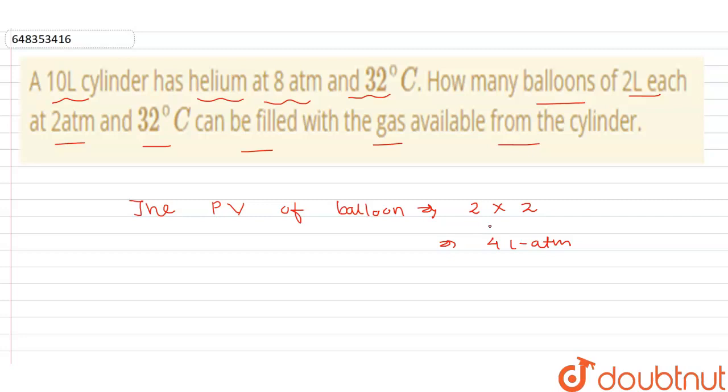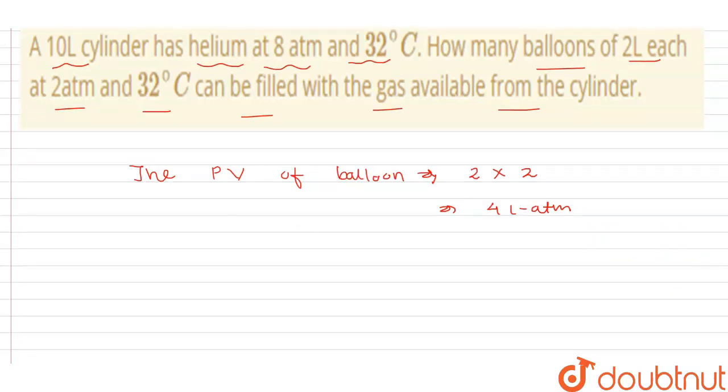So the PV of helium available - the pressure into volume of helium available.